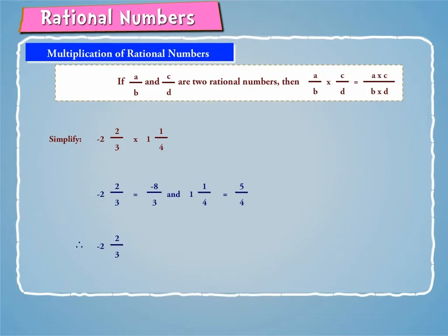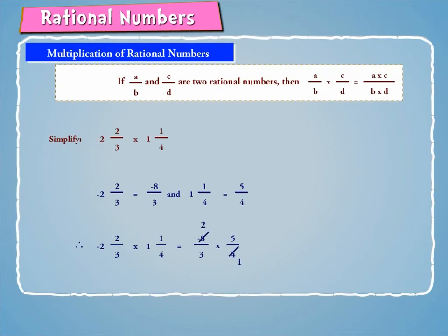Therefore, minus 2 and 2 by 3 into 1 and 1 by 4 is equal to minus 8 by 3 into 5 by 4, which is equal to minus 10 by 3, which is equal to minus 3 and 1 by 3.